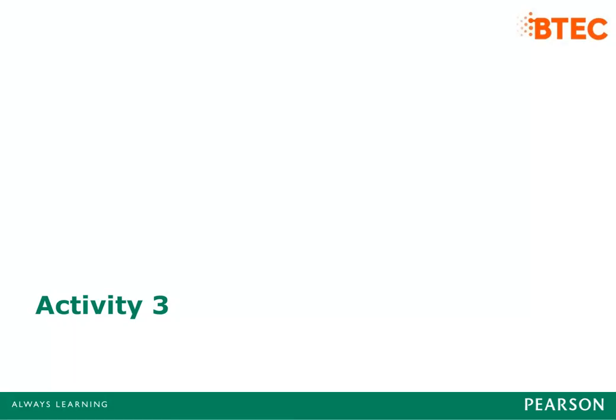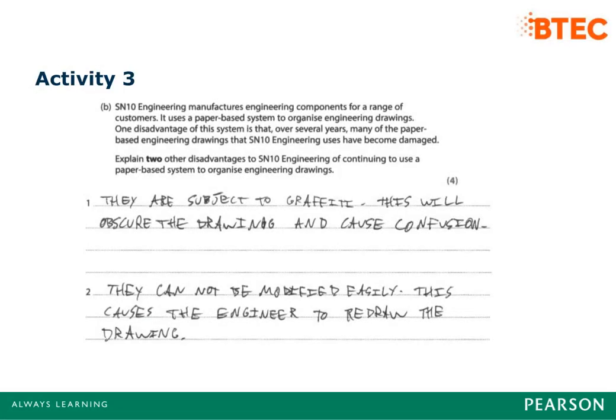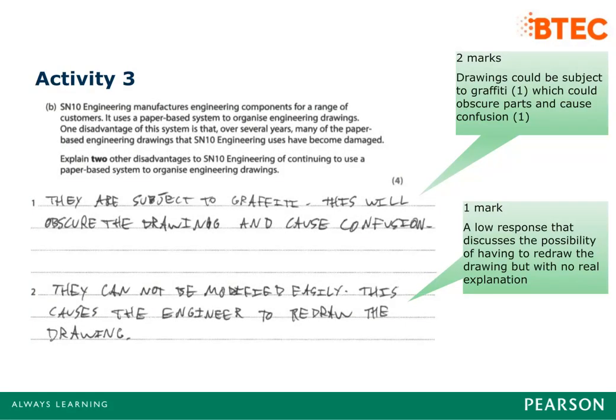Activity 3: Look at the example above. Using the mark scheme, decide what mark you think should be awarded and why. Marks have been awarded for identification of two reasons with an extension to the first response to award the second mark — a total of three marks awarded for this response.